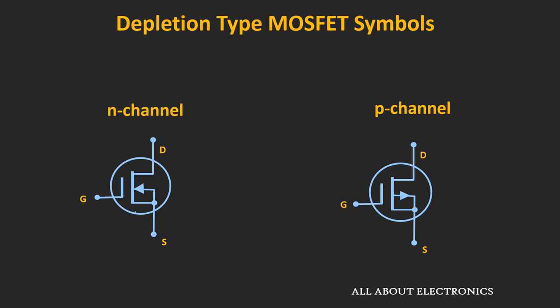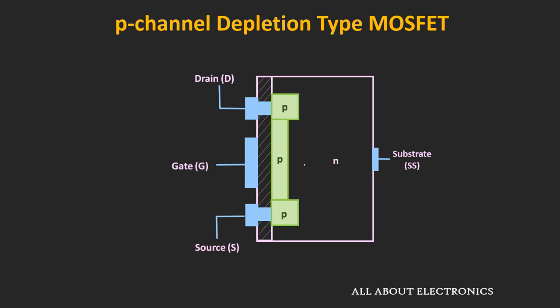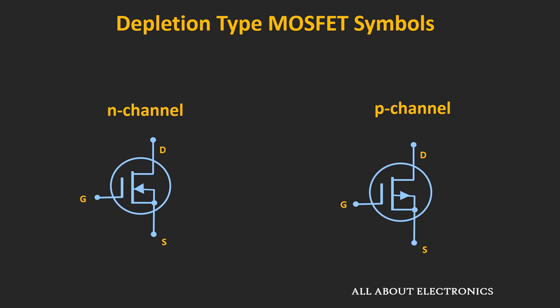The only difference between the N-channel and P-channel MOSFET symbols is the direction of the arrow. If it is going inward, it indicates the N-channel MOSFET; if it is going outward, it represents the P-channel MOSFET. This indicates the direction of current flow whenever the PN junction formed by the channel and the substrate is forward biased. For the N-channel MOSFET the current flows inward, and for the P-channel MOSFET it flows in the outward direction.